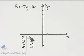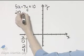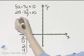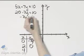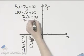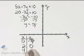And then one more ordered pair solution. Let's let x be, say, 4. If x is 4, I'll have 20 minus 7y is 10. Subtract 20 from both sides and I'll have 10 minus 20 or negative 10. Divide both sides by negative 7 and I'll have y is 10 sevens.